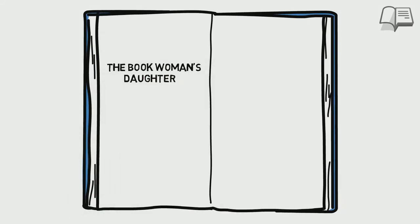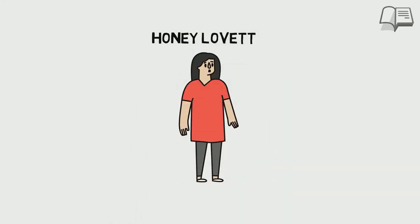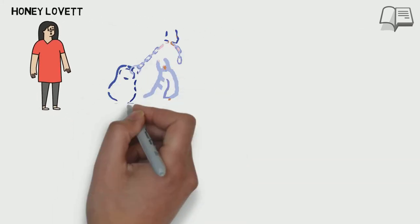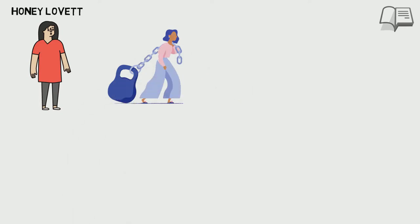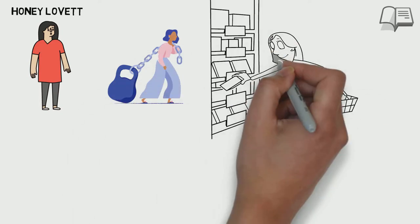The Book Woman's Daughter, a novel by Kim Michelle Richardson. Honey Lovett, the daughter of the beloved Troublesome book woman, must fight for her own independence with the help of the women who guide her and the books that set her free.